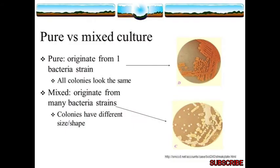What is pure culture and what is mixed culture? Here in diagram D, you will see that it is originated from only one bacterial strain — only one bacterial strain means all colonies look the same. Those colonies which you are able to see all have the same strain. Mixed culture means they are originated from many bacterial strains and have different shapes as well as different sizes — some are round, some are flat, some are rectangular in shape.